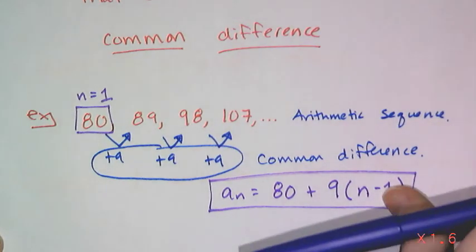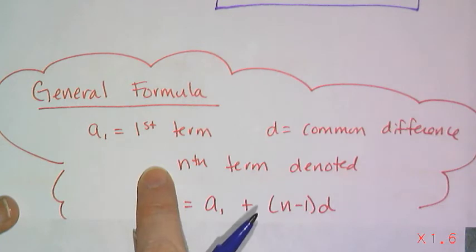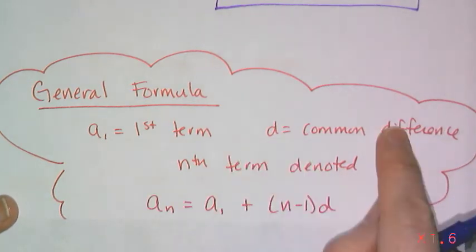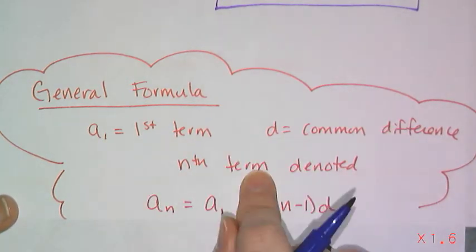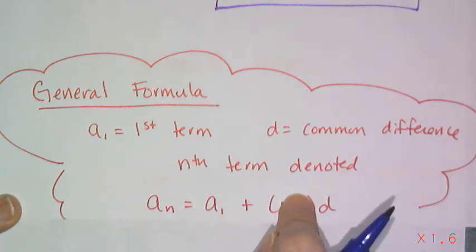And if I want to generalize, then I can say that a sub 1 is my first term, d is my common difference, and the nth term, or the general term, is denoted a sub n equals a sub 1 plus n minus 1 times d.